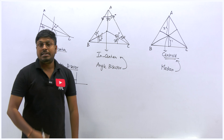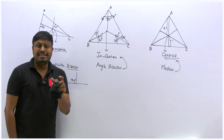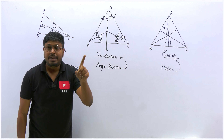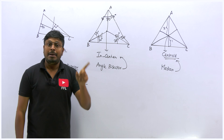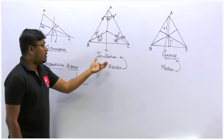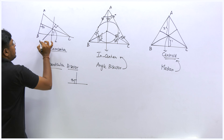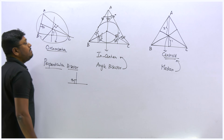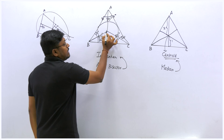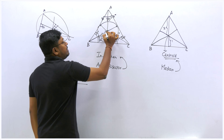Now you should understand the difference between centroid, incenter, and circumcenter. For incenter questions, remember the word angle bisector. For centroid questions, draw a median. For circumcenter questions, draw a perpendicular bisector. If you look online, you will see that for the incenter a circle is drawn inside the triangle. This is because the distances from the incenter to all three sides of the triangle are equal, so a circle touching all three sides fits exactly inside.